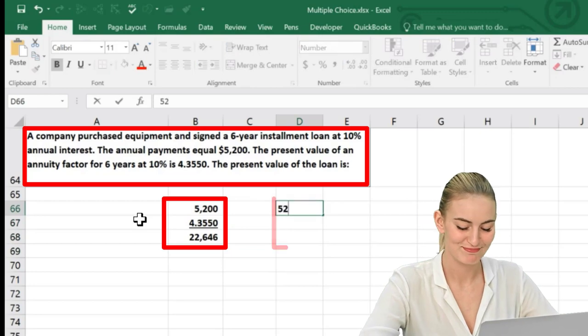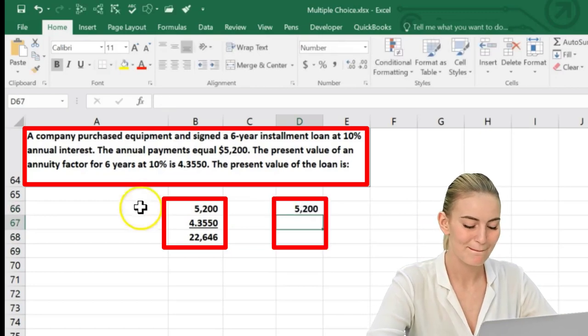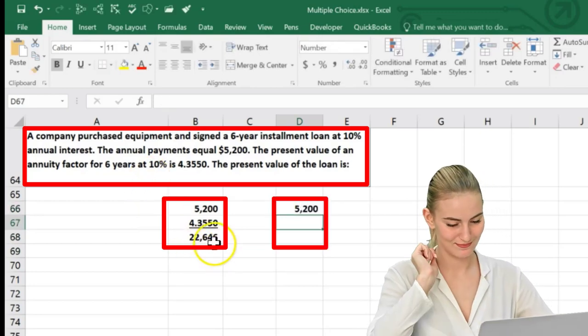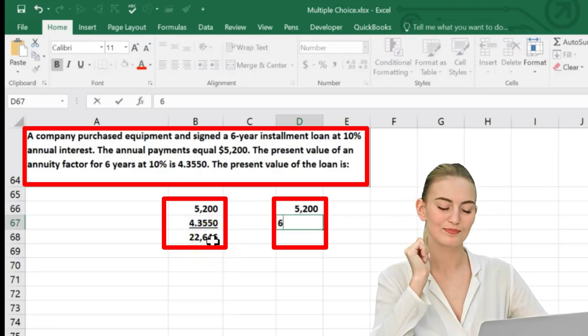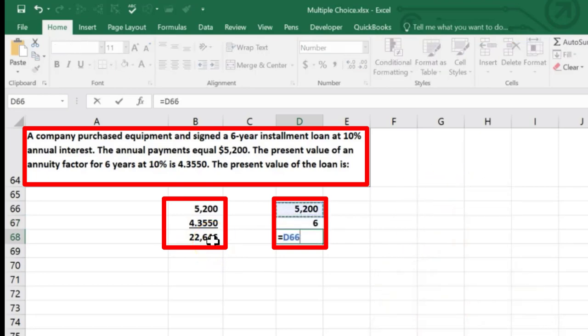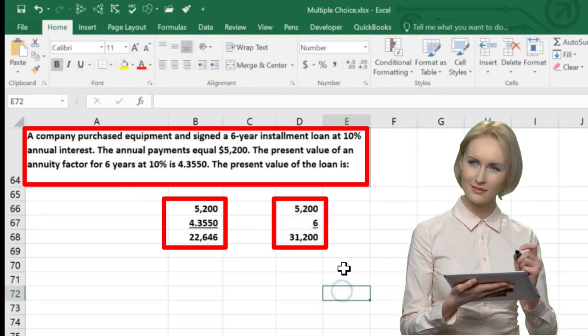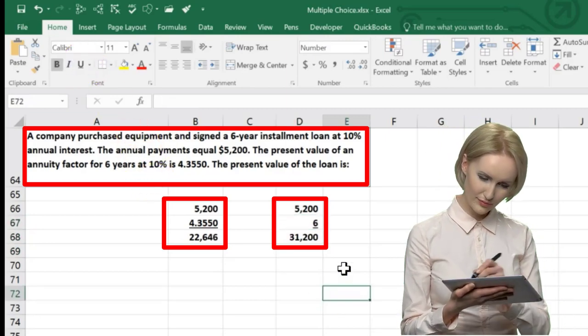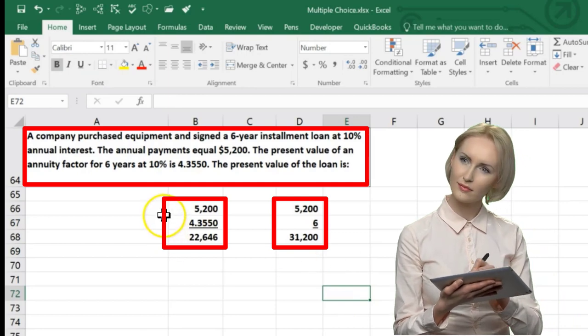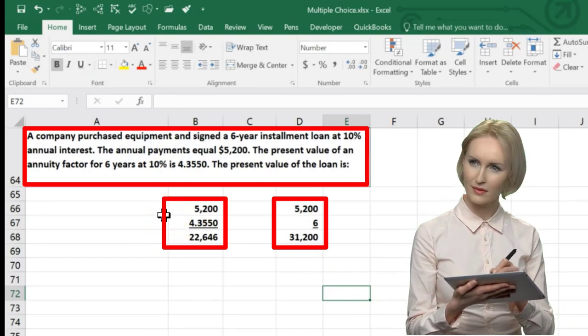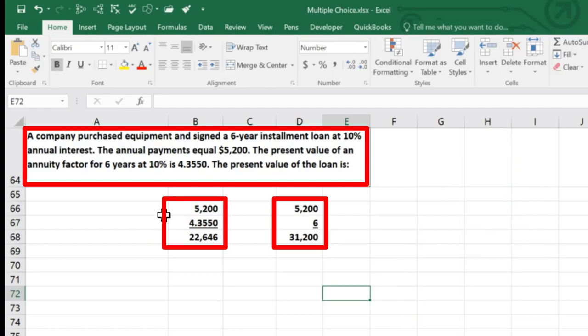And again, the instinct would be if there was no interest factor here, would be just to take this and say, well, if there's going to be six years and there's six payments, it should be $5,200 times six. But that's not the present value because of the fact of this time value of money, or this rate that we're going to have for the present value, which is going to be of course less than the actual dollar amount.